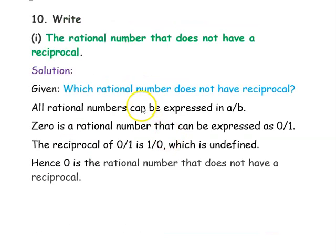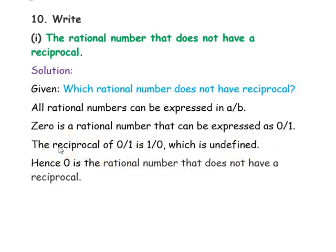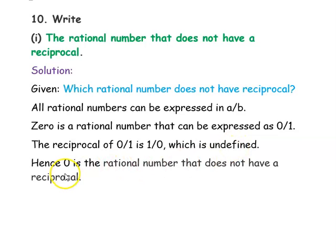The next question is: write the rational number that does not have a reciprocal. All rational numbers can be expressed in the form a/b, and the reciprocal of a/b is b/a. We need to find a rational number that can be written in a/b form but not in b/a form. Zero is a rational number — it can be expressed as 0/1, but the reciprocal would be 1/0, which is undefined. So 0 is a rational number that does not have any reciprocal.